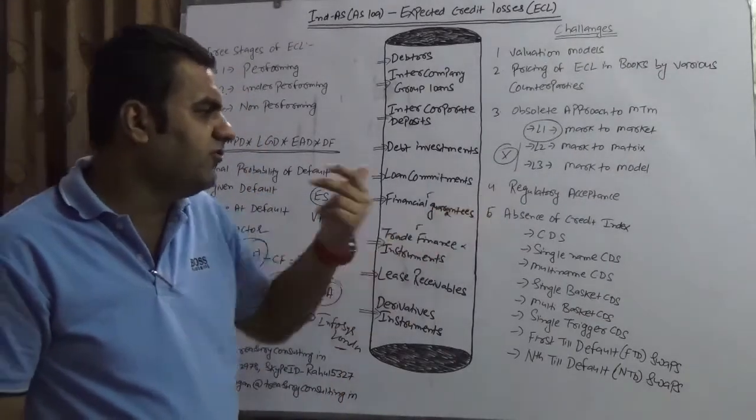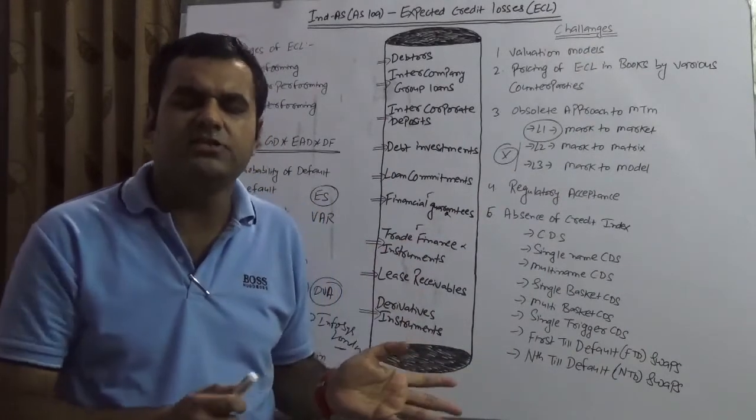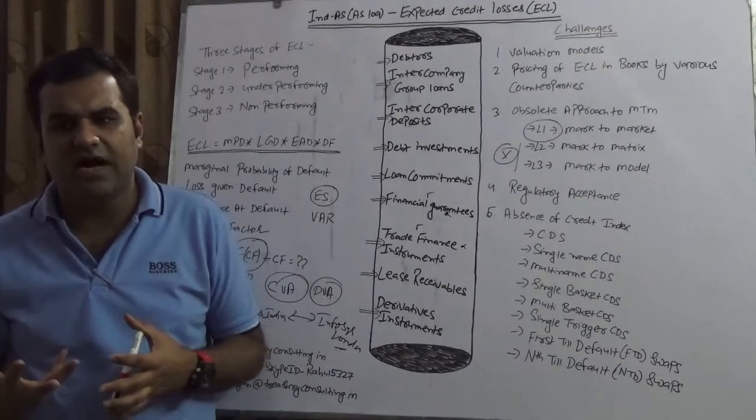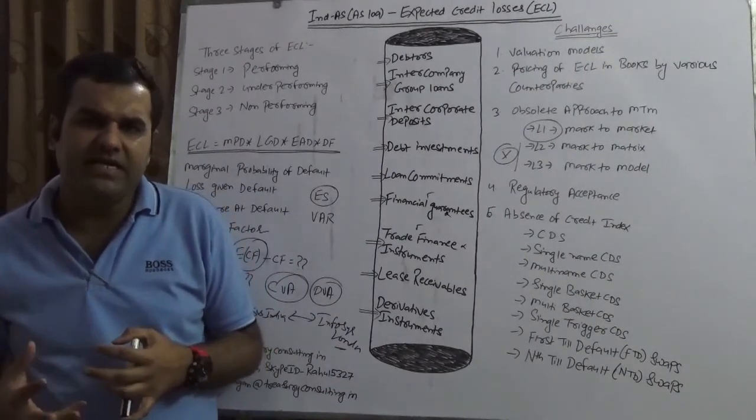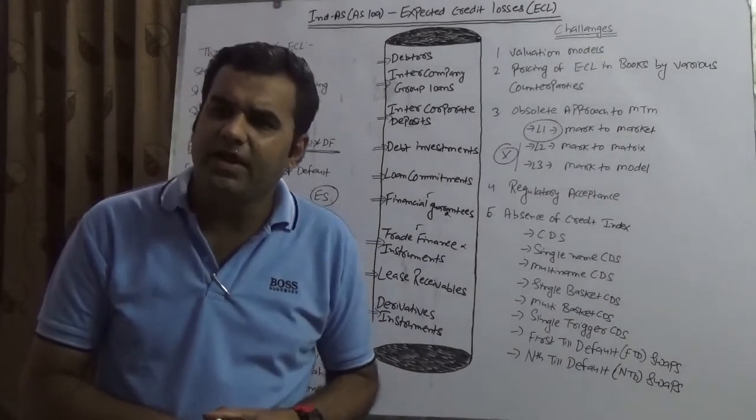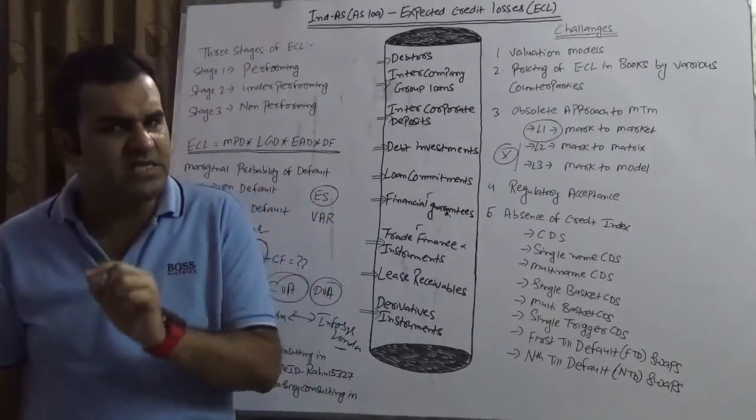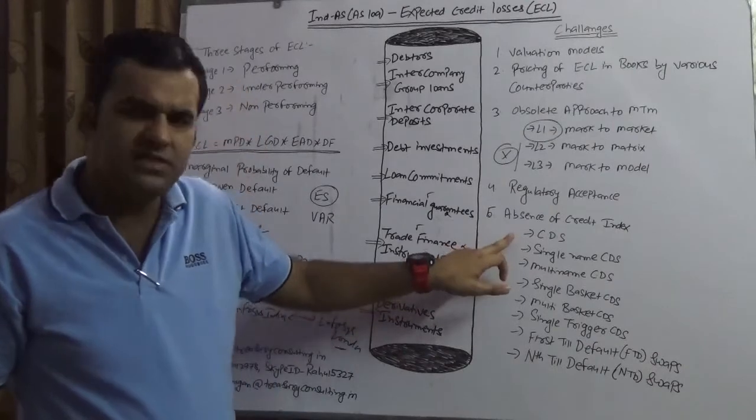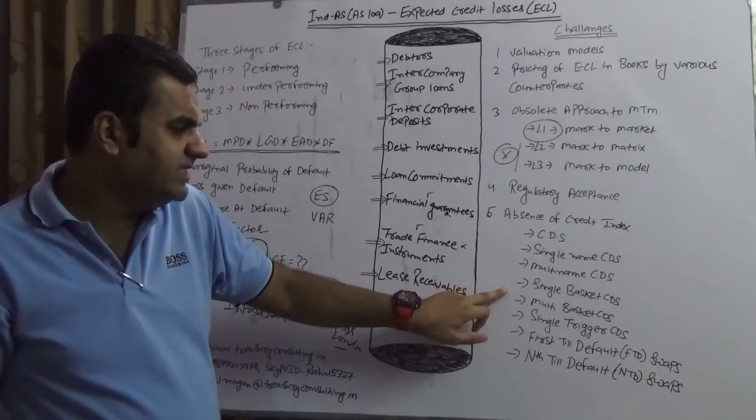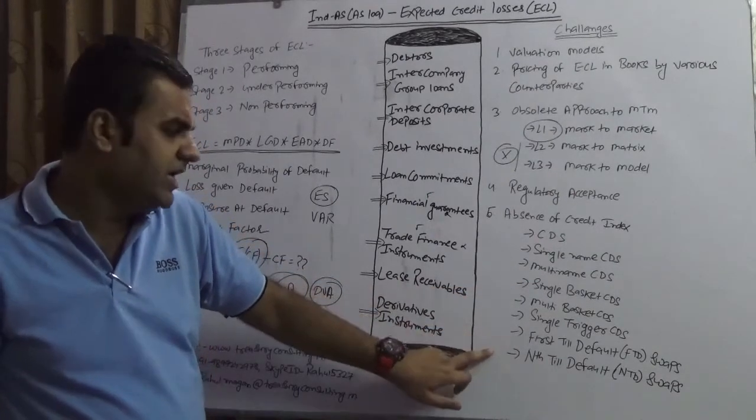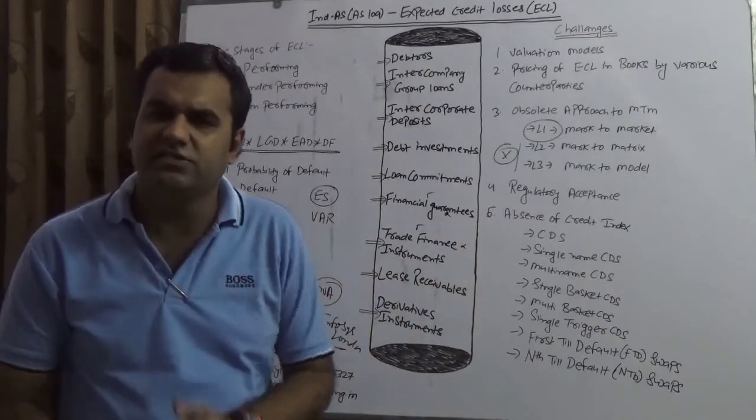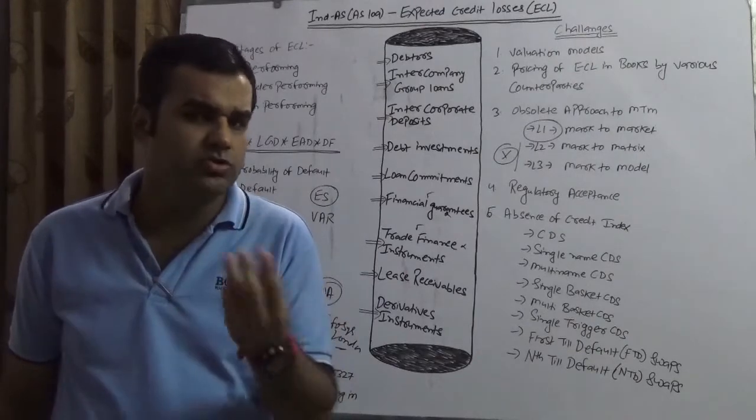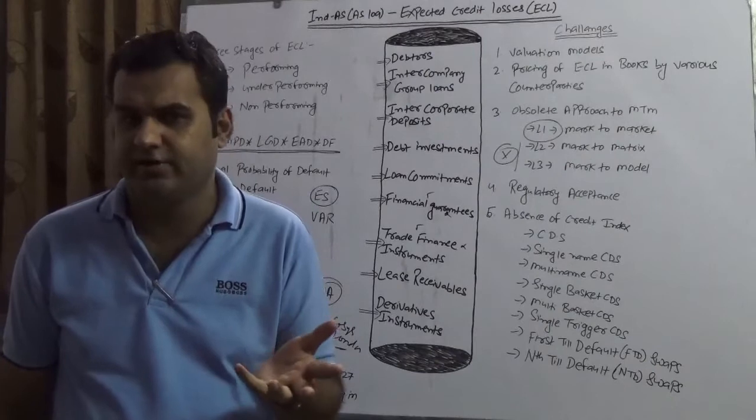Another biggest problem is the absence of regulatory acceptance. Theoretically speaking, Ministry of Corporate Affairs issued a notification in 2015 that companies have to comply with INDAS, and April 2018 you have to comply retrospectively and prospectively both. But the question is, do you seriously understand that you need these indices? You need CDS - single name CDS, multi name CDS, single basket CDS, multi basket CDS, single trigger CDS, first to default swaps, and nth to default swaps. Without having all these instruments, entering into ECL is just like suicide. It's like jumping into the sea without even having a swim guard, forgetting whether you know swimming or not. You have nothing in your hand.